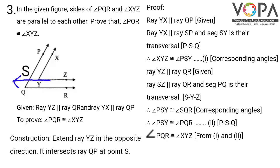From equations 1 and 2, we have angle PQR congruent to angle XYZ, because both angles are congruent to angle PSY. Hence, they are congruent to each other. This completes the proof.